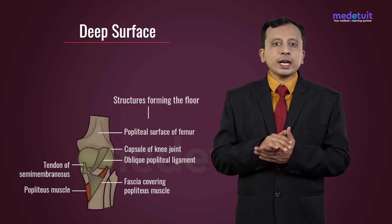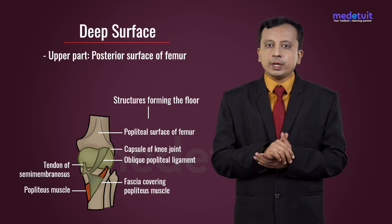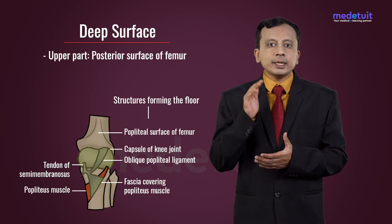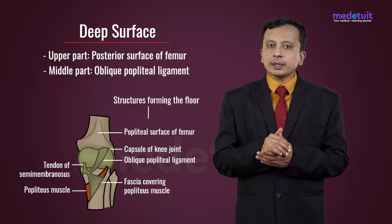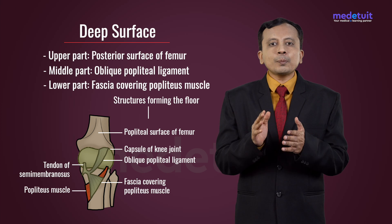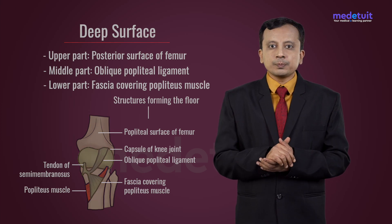The relations of the popliteal artery include a superficial surface and a deep surface. The deep surface is related to the following structures from above downwards: in the upper part it is related to the posterior surface of the femur; in the middle part it is related to the oblique popliteal ligament; and in the lower part it is related to the fascia covering the popliteus muscle.